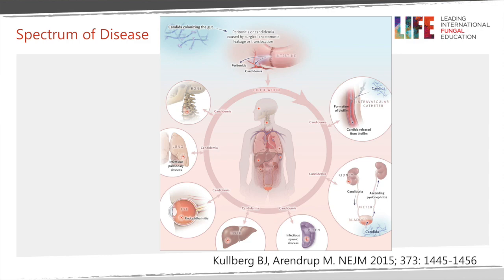In this slide you can see the spectrum of invasive candidiasis and the pathogenesis of the disease. Candida colonizes the gut, and whenever there is a breach in the gastrointestinal tract, there is contamination of the intra-abdominal cavity with candida, which eventually leads to infection. The breach could be related to a spontaneous perforation or to previous surgery such as occurs in anastomotic leak. Candida may then spread into the bloodstream and infect several other organs.